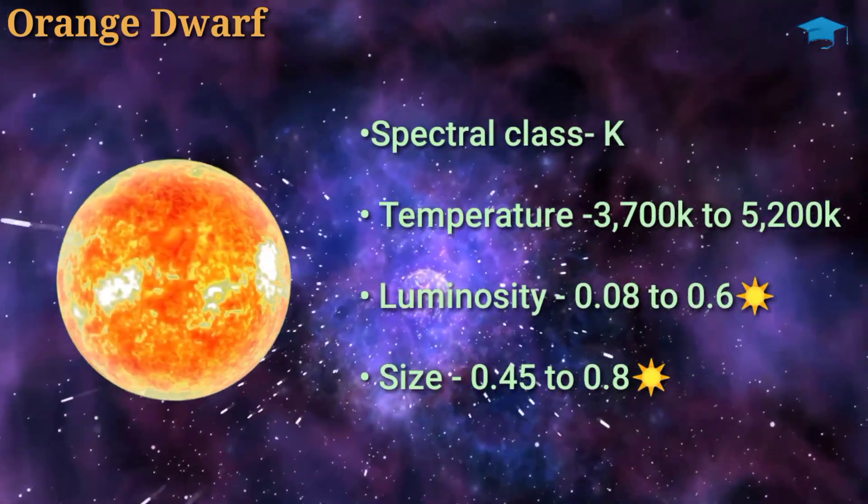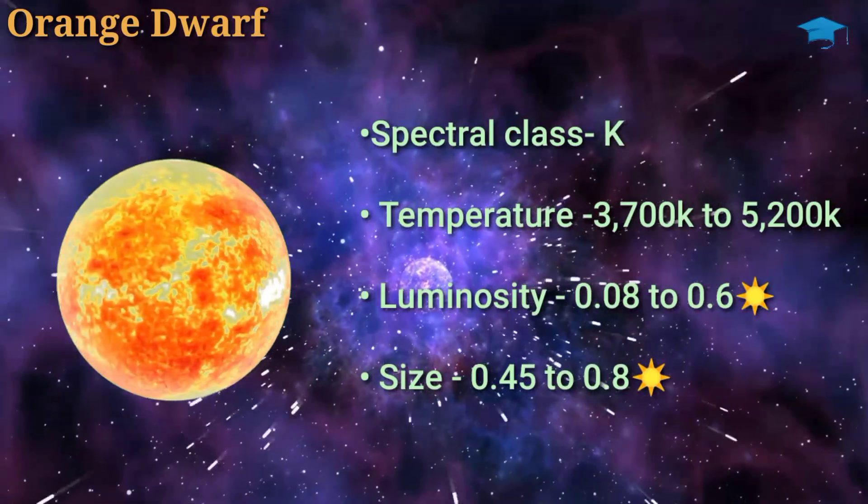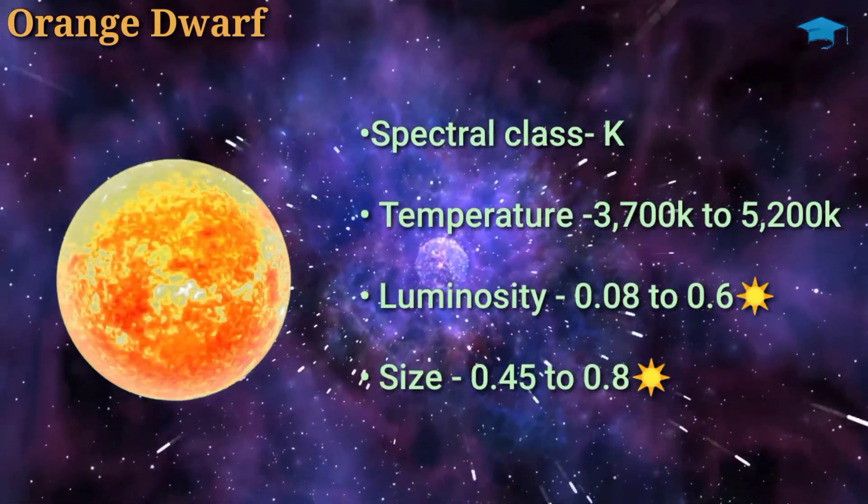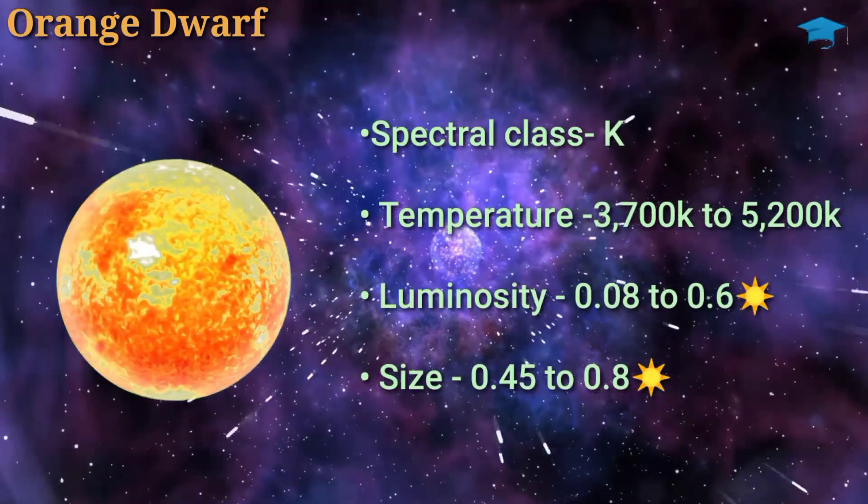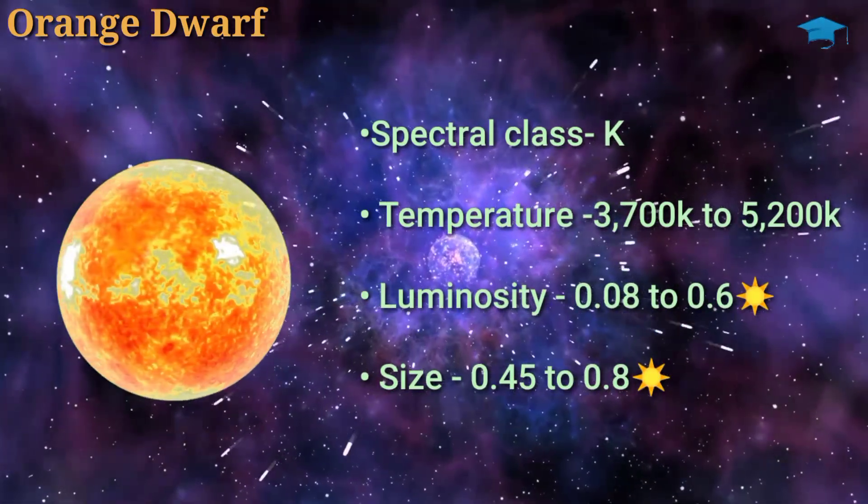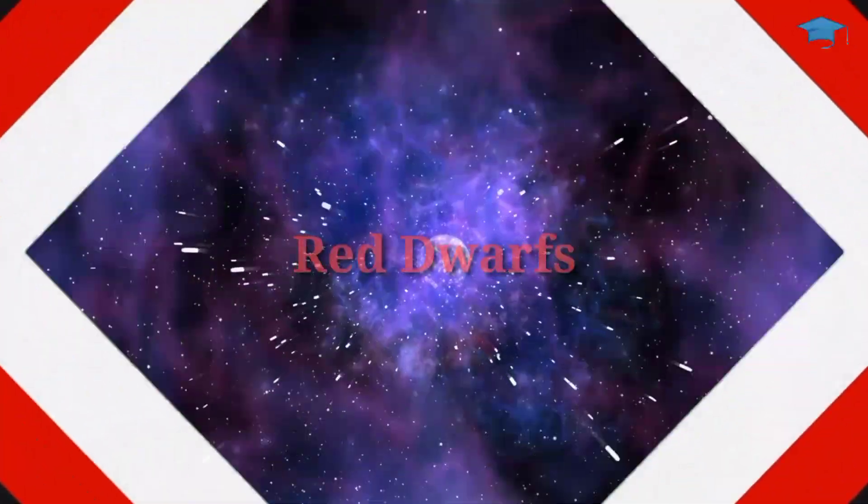These types of stars remain orange in color for a very long period of time because they emit less UV radiation and remain stable for a long period of time, making them very favorable for exoplanets that reside in the habitable zone. Now comes red dwarfs.